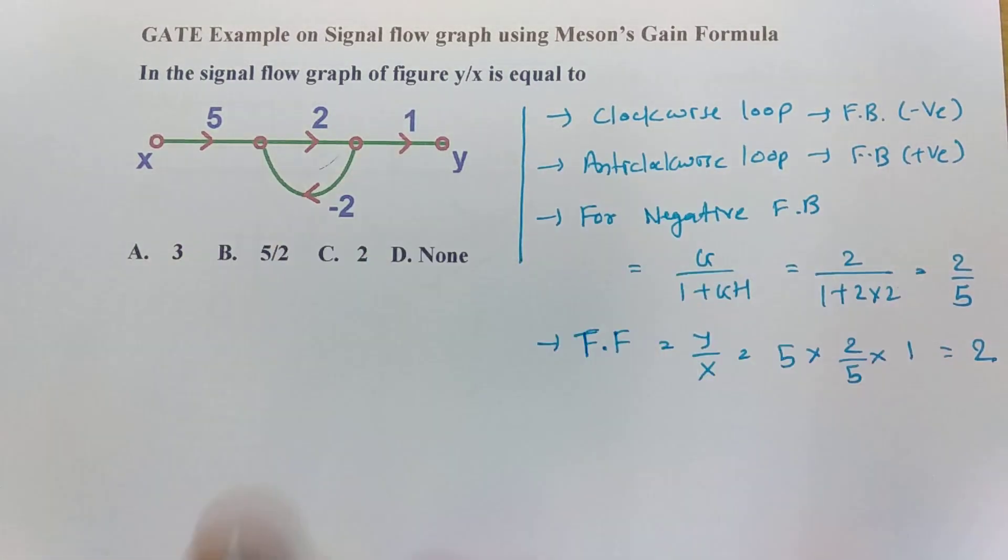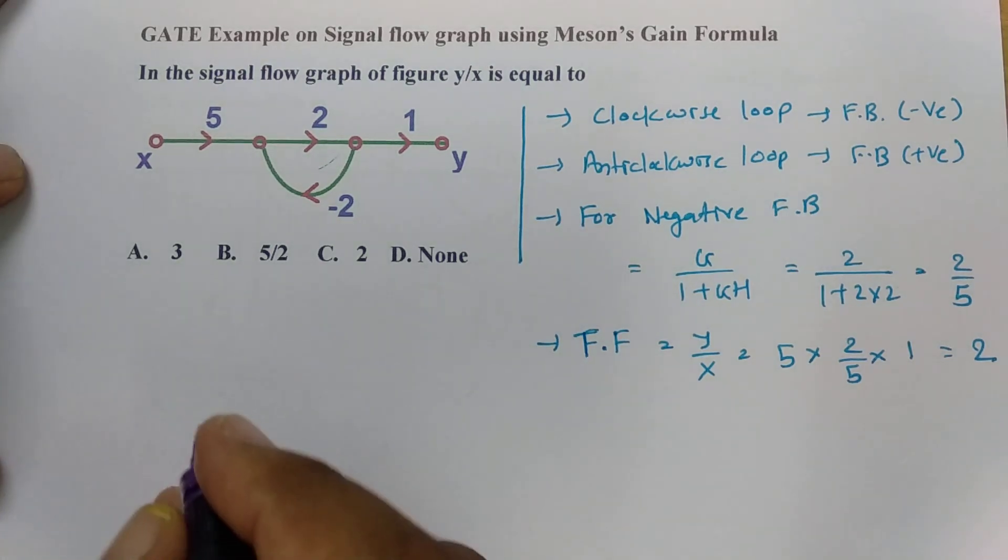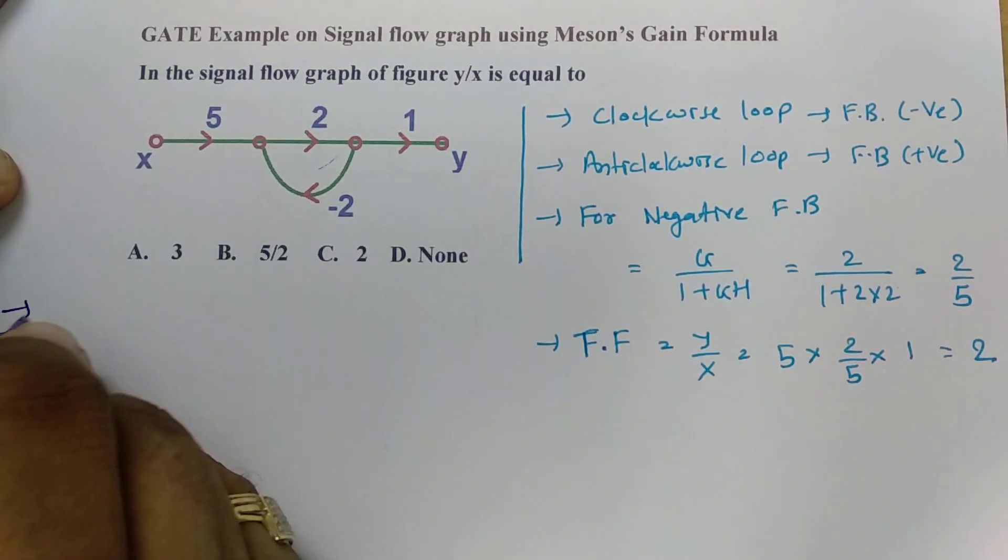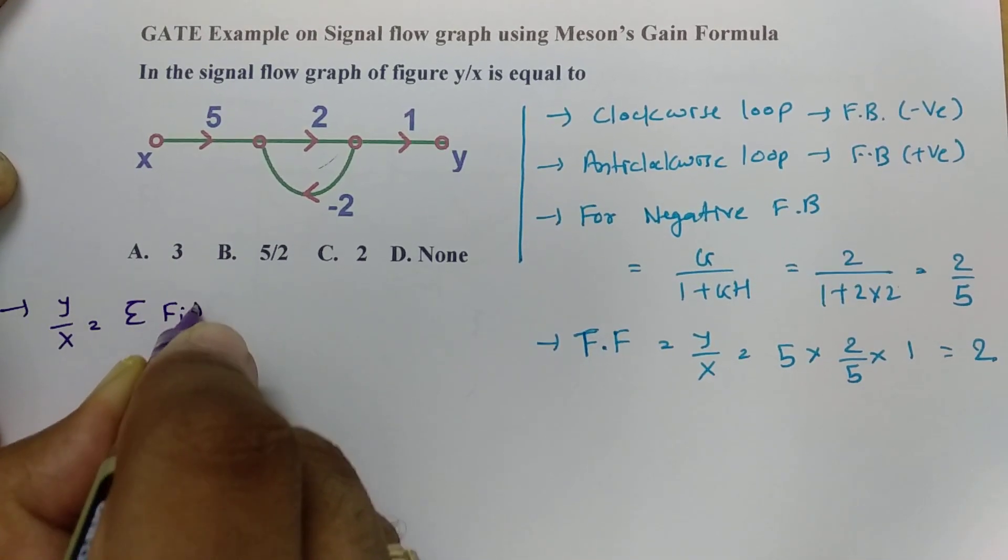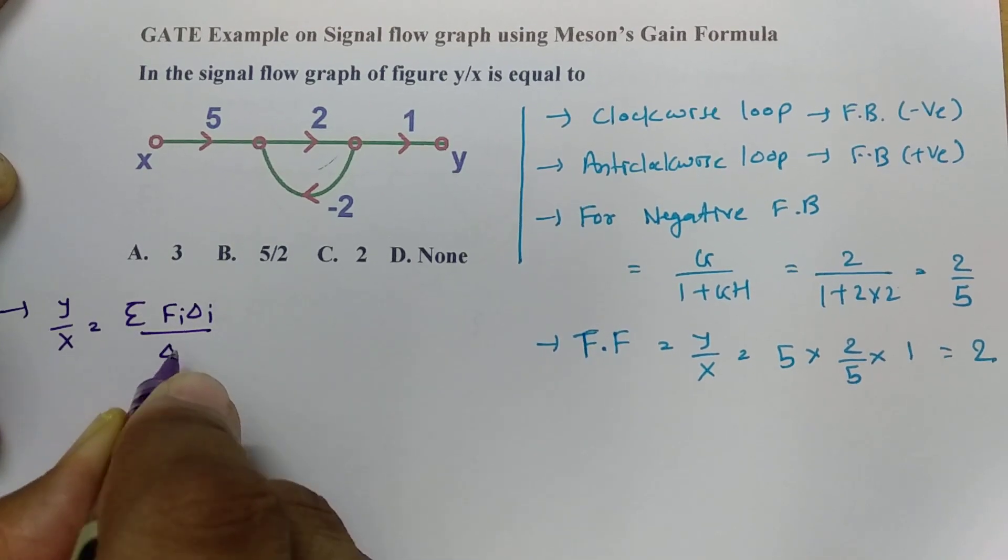So this is one simple way by which we can solve this example. Now I'll explain second way, that is Mason's gain formula. We know it is y by x that is summation of Fi delta i divided by delta.